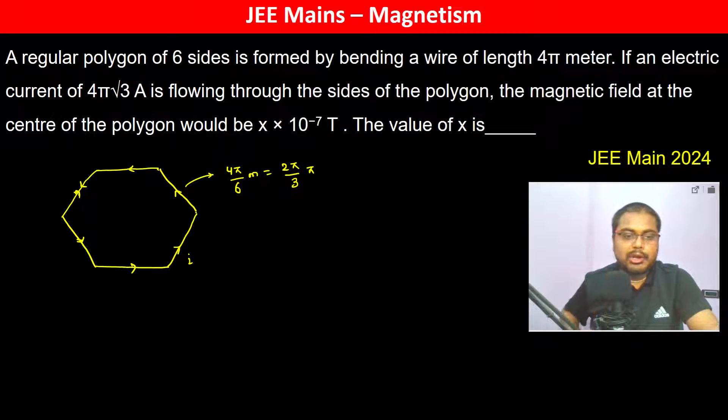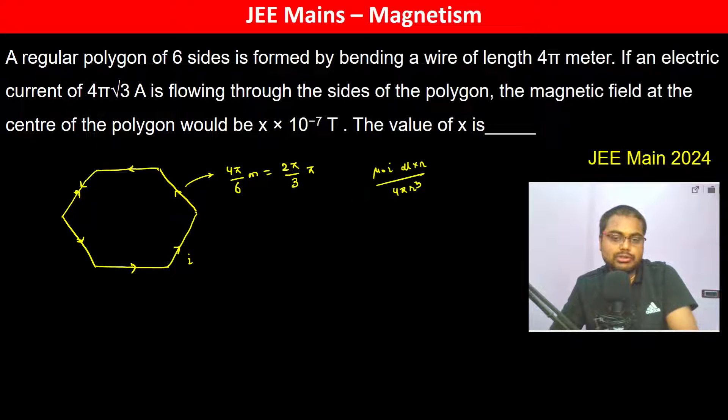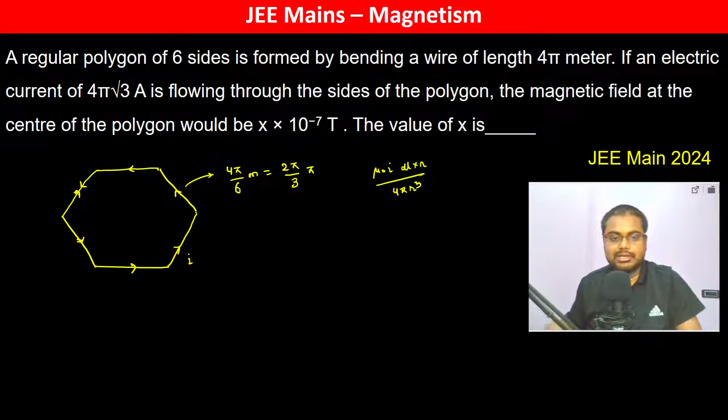We have the Biot-Savart law: μ₀i dl cross r divided by 4πr³. Since it's dl cross r, the magnetic field produced at the center is in the upward direction from all sides, so it's going to be additive from all sides.